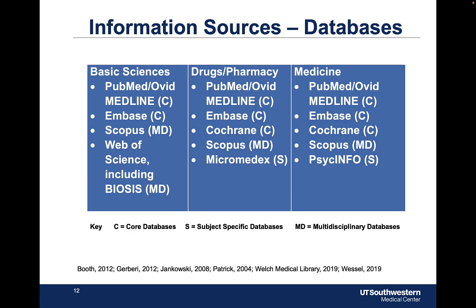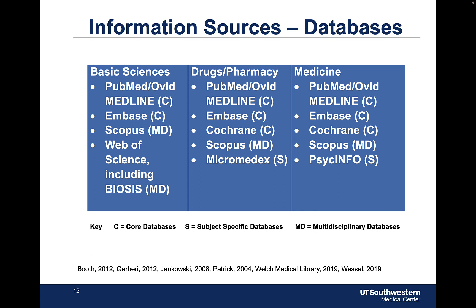There are a bunch of different databases — these are just a few that we subscribe to at UT Southwestern. These are what I call our heavy hitters, the ones that people use a lot. PubMed and Ovid Medline are on the same line because they're basically the same database with different interfaces. Embase and Scopus we'll look at on Tuesday in class. PsycINFO is good if you're looking into psychiatry, psychology, or a multidisciplinary subject that has aspects of that. Scopus has MD after it because it's multidisciplinary.